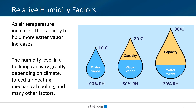Relative humidity can be affected by many things. Air temperature is one of the biggest factors that affect RH. As air temperature increases, the capacity to hold water vapor also increases. For example, air that is 30 degrees Celsius has a larger capacity to carry water vapor than air that is 10 degrees Celsius.